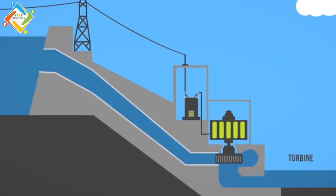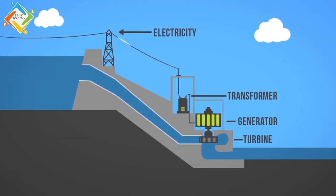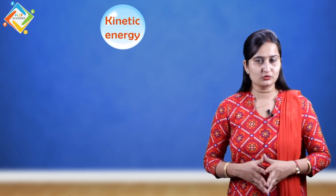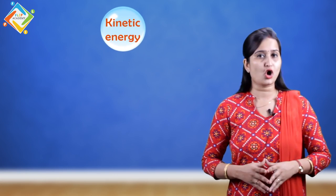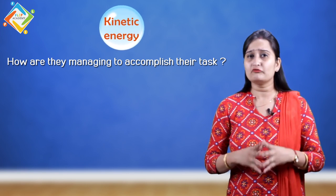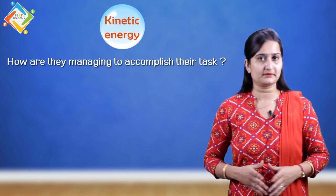Now, if I ask you a question: the wind turbine can rotate the blades in the wind turbine. The water is rotating in the water turbine, which generates electricity. The bullet, which moves with high velocity, can strike the target. My question for you is, these moving objects, how are they managing to accomplish their tasks?